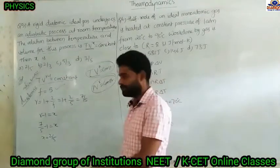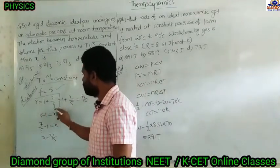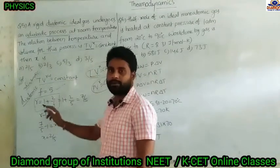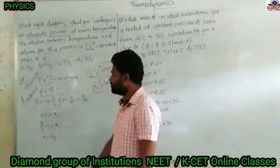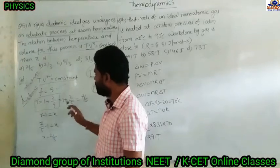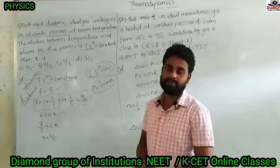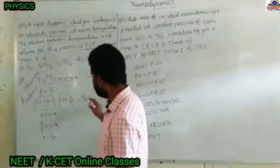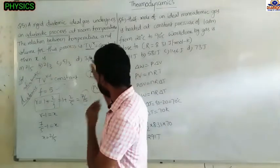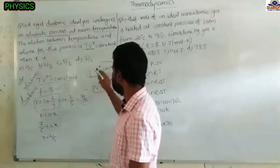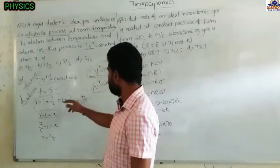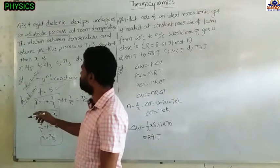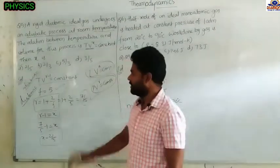Comparing with T × V^X = constant: X = γ − 1. For a diatomic gas, degree of freedom F = 5 and γ = 1 + 2/F = 1 + 2/5 = 7/5. So X = 7/5 − 1 = 2/5. Option A is the right answer.